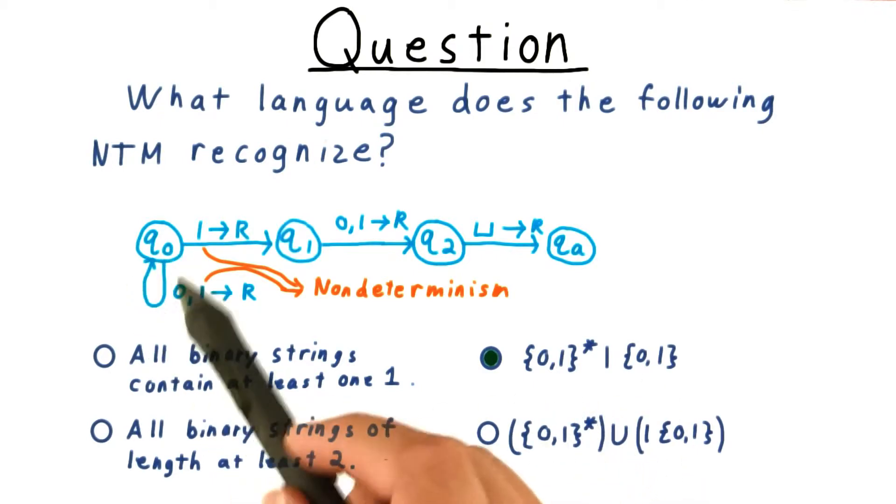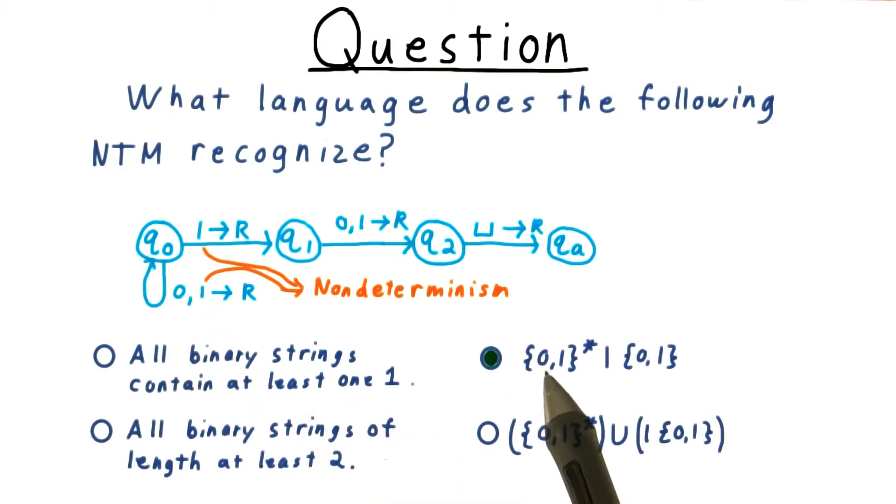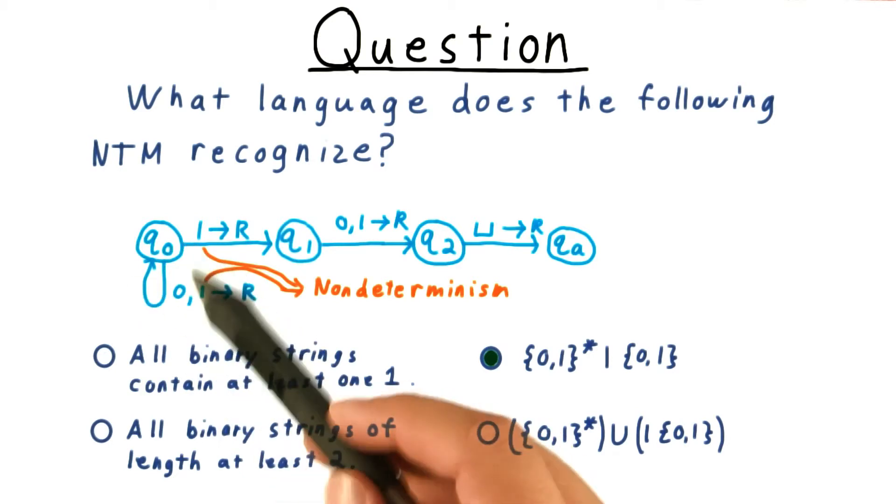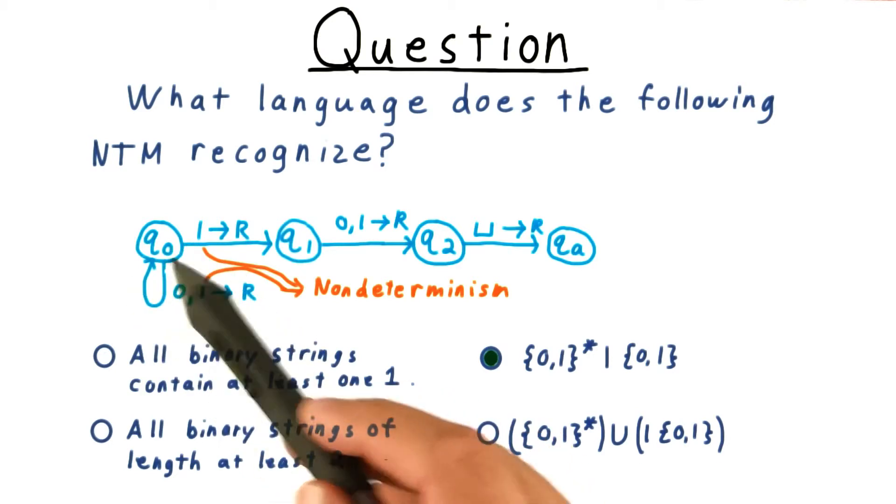This self-loop on the initial state corresponds to the initial 0, 1 star. This transition can happen for the whole length of the string, or it can happen none at all.